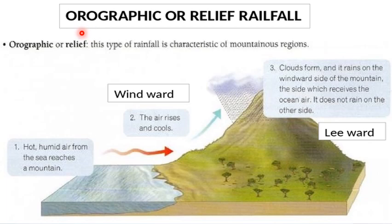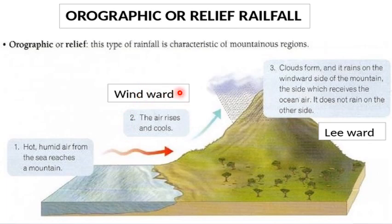Types of rainfall: orographic, also known as relief rainfall, is related to mountains. For this rainfall there should be a presence of mountains, hot and humid air moving in the direction of mountains. The side from where the winds are moving towards a mountain is known as the windward side. Water gets accumulated — condensation takes place — on the windward side, so it rains there. On the leeward side, the wind starts descending, giving no rainfall or very light rainfall.